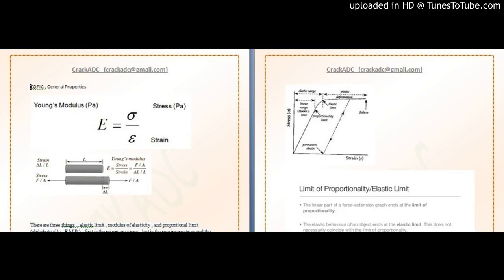Young's modulus is inversely proportional to flexibility — if Young's modulus is more, flexibility is less. Young's modulus is also inversely proportional to elasticity. Elasticity is like a rubber band that regains its original position when released. Young's modulus is also inversely proportional to ductility, because ductility involves drawing into wires — it relates to strain.